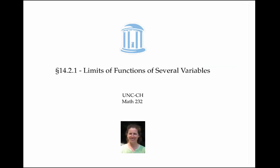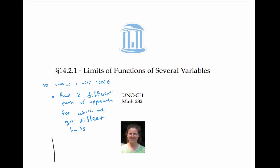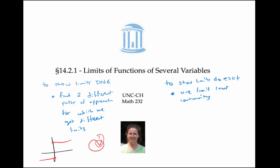In this video, we worked out examples where limits did and did not exist for functions of several variables. The main trick to show a limit does not exist was to find two different paths giving different limits — analogous to the calculus one case of different one-sided limits, except now there are infinitely many paths. To show a limit does exist, we used limit laws, continuity to plug in values, or polar coordinates to reduce the problem to a single-variable limit as r goes to zero, combined with the squeeze theorem.